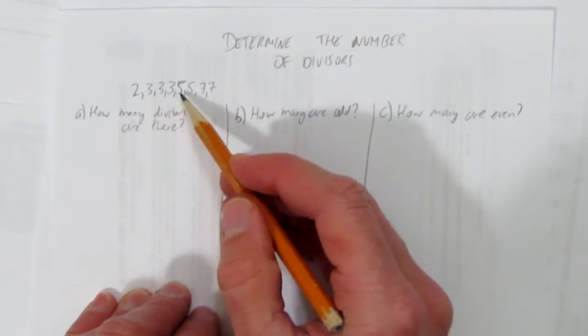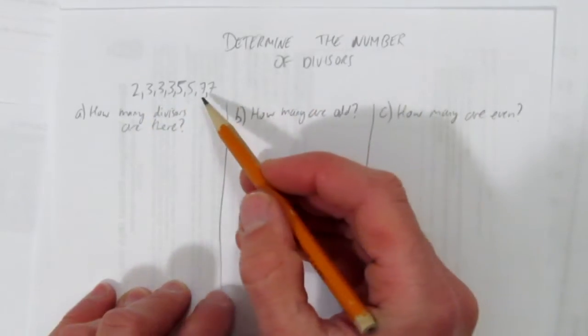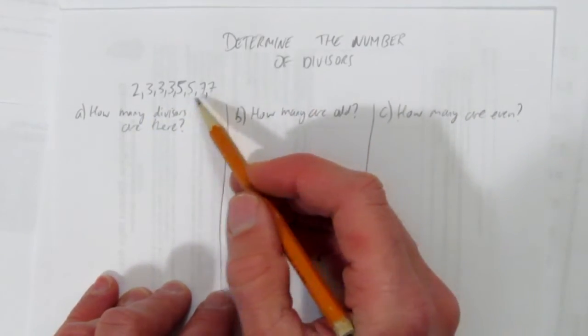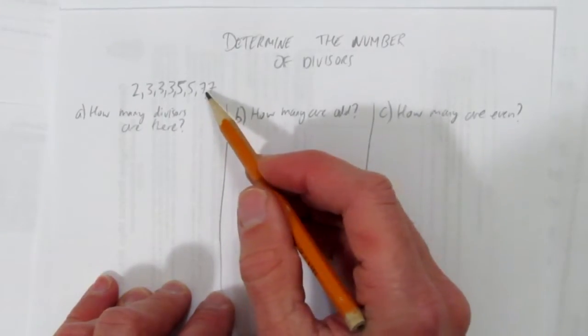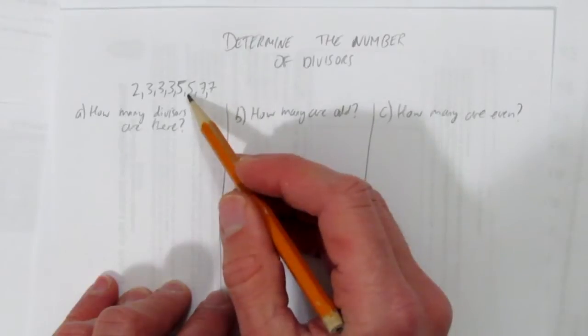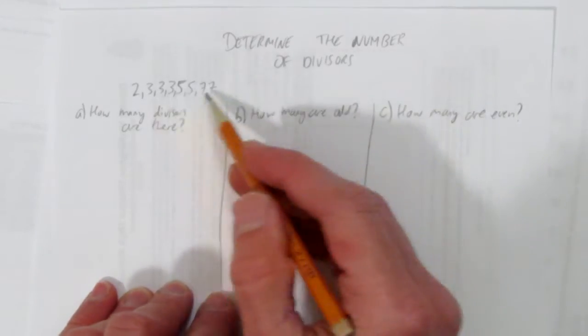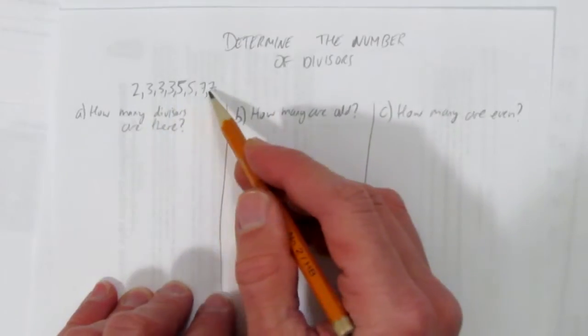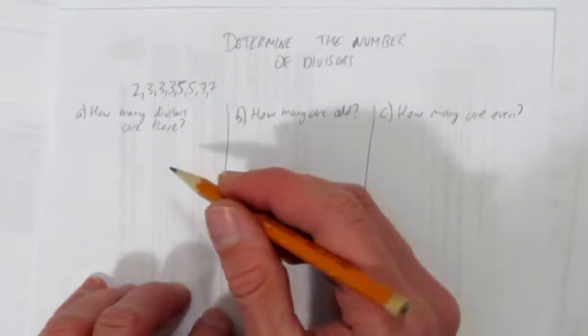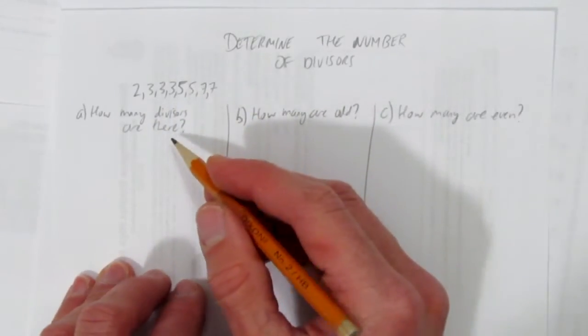Well, obviously 2 and 3 and 5 and 7 are a divisor of the number, but so is any combination of these times together, like 7 times 7, 49. So the number divides by 49. It also divides by 5 times 7, or 5 times 5, or 3 times 5 times 5. So any combination, you can use 6 of them or 7 of them. So we want to know how many combinations of divisors there are.